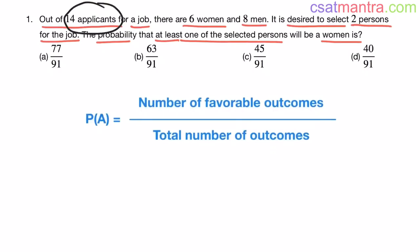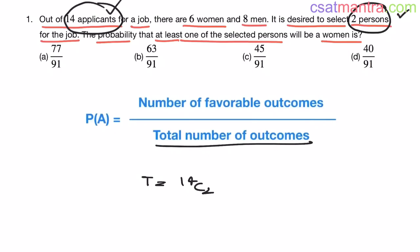Here you have 14 applicants for a job, and out of these 14 applicants you have to select two persons. Since we are talking about selection, we use combination: 14C2 ways. This is the total number of outcomes. 14C2 = 14 × 13 / (2 × 1) = 91.